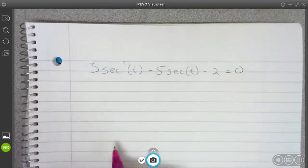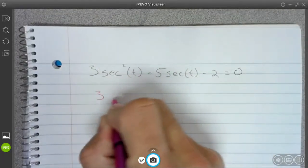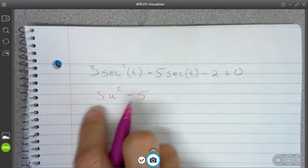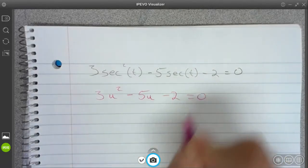So if you wanted to, you could replace all these secants with little u's just to make it a little friendlier looking. So 3u squared minus 5u minus 2 equals 0.